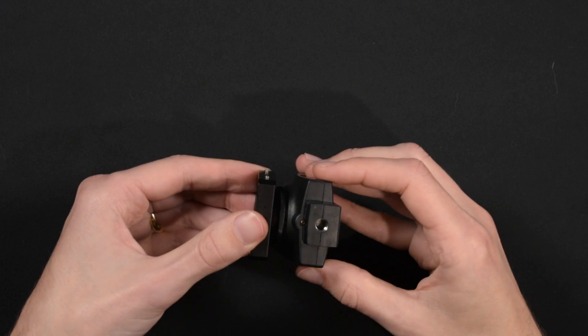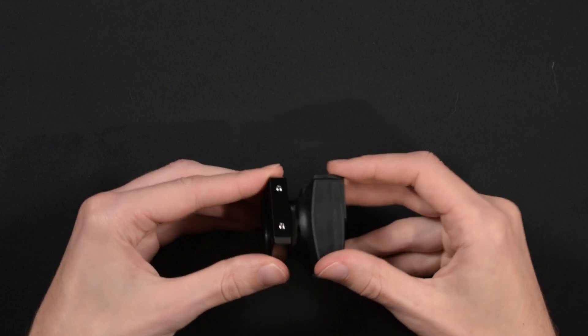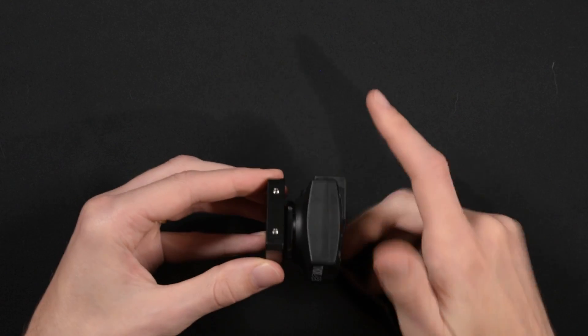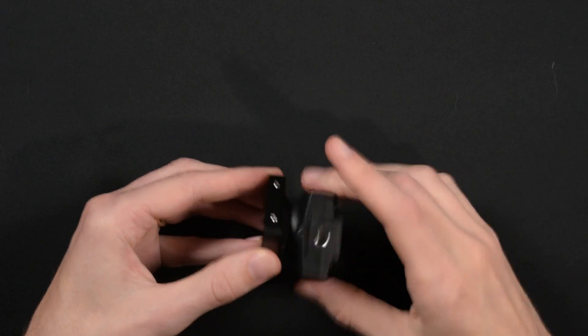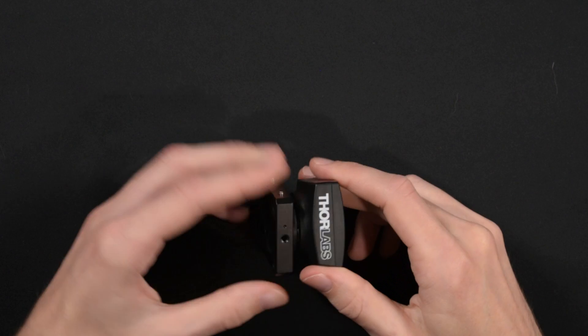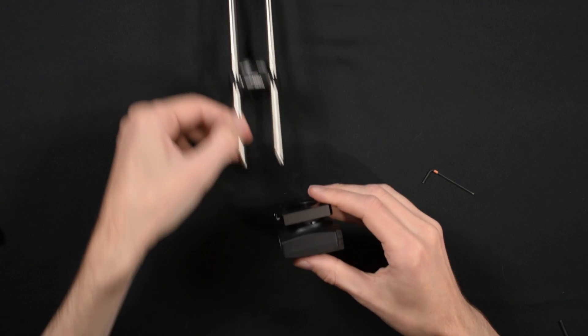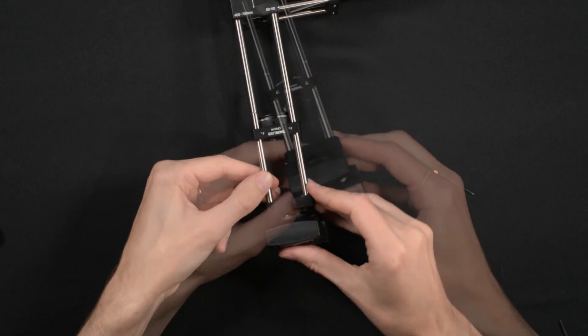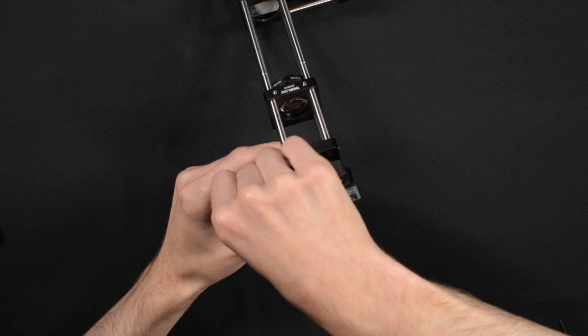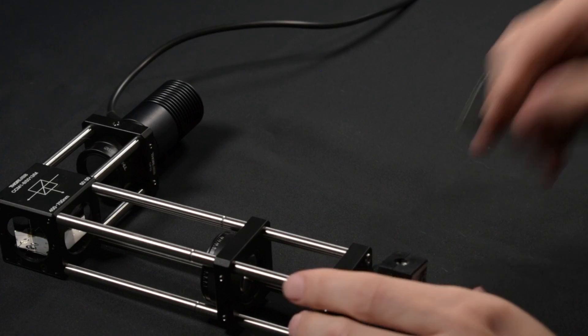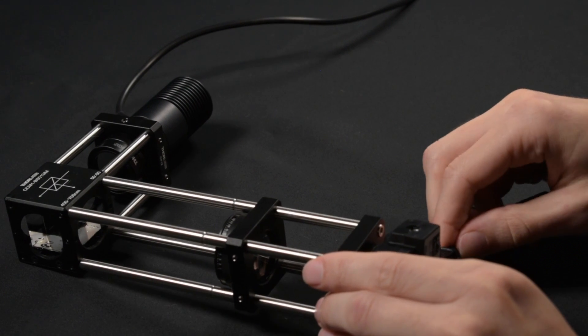Now connect your camera to a cage plate using an adapter ring. The camera that I'm using is a DCC 1545M monochrome camera from Thorlabs. I will not advise using a color camera for the auto-collimator setup, so be sure that your camera is a monochrome one. You may now secure your camera at the end of your cage system assembly. Connect your camera to your computer and start your image acquisition software.